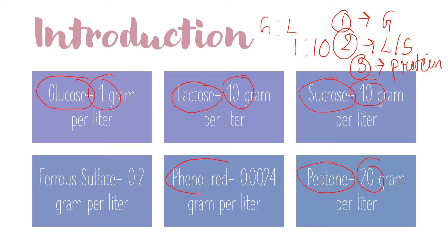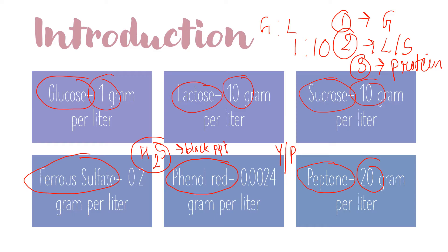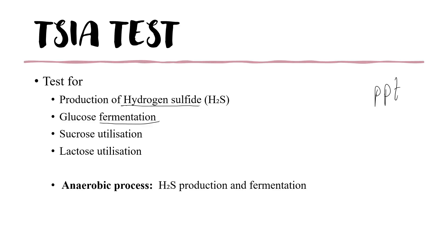Phenol red is the pH indicator used in this medium. In acidic conditions, phenol red will be yellow in color, and in alkaline conditions it will be pink in color. Ferrous sulfate is used to detect H₂S production — H₂S production results in a black precipitate. If the test tube has a black precipitate, we know there is H₂S gas production.